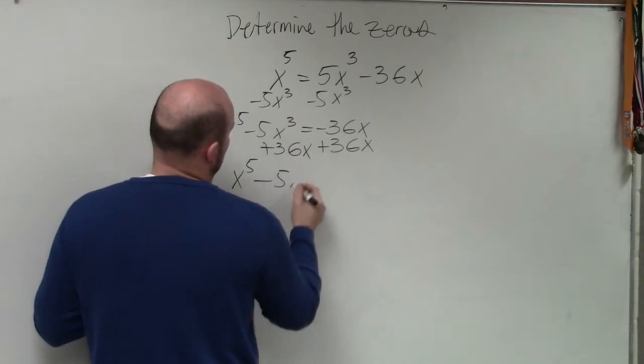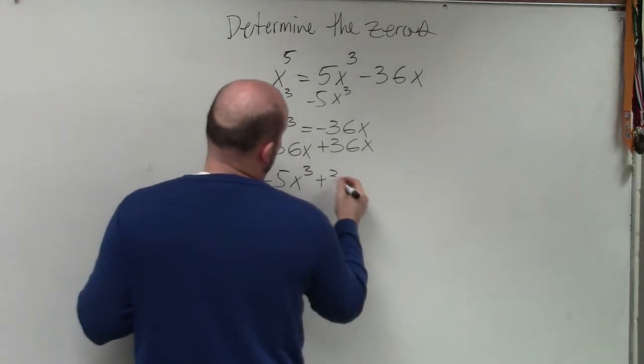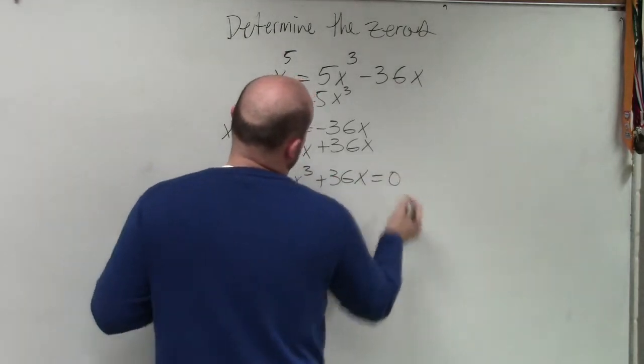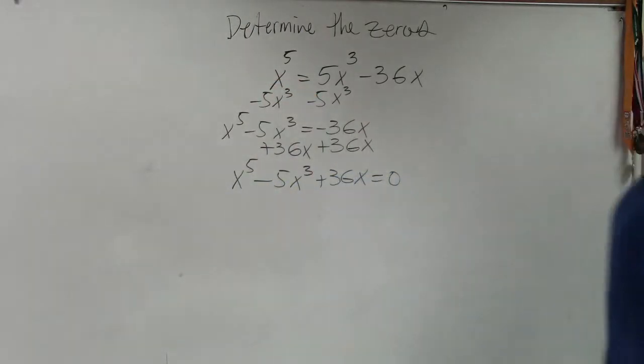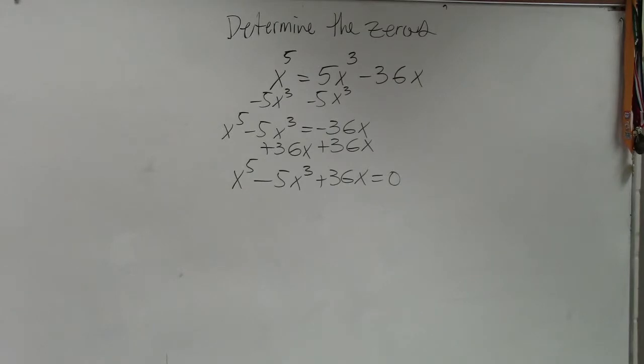You don't have to, but it just helps out when explaining the factoring technique. So therefore, by solving this, I get x to the fifth minus 5x cubed plus 36x equals 0. Does everybody follow me with what I did there? All I did was I set it equal to 0.